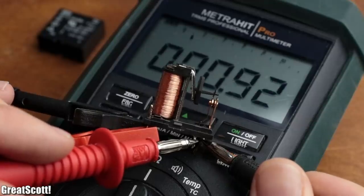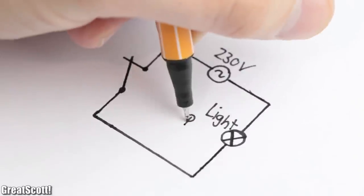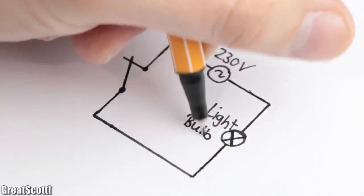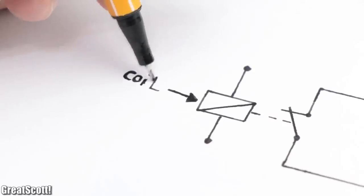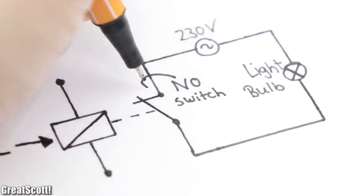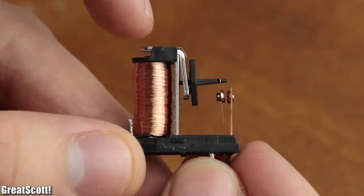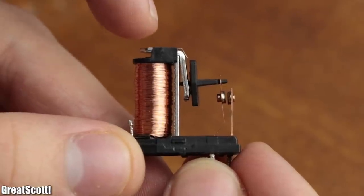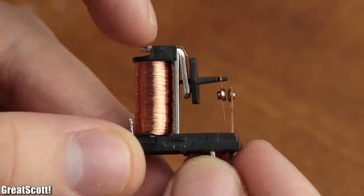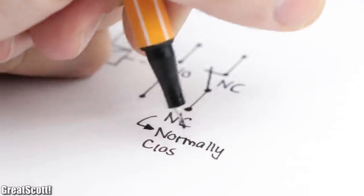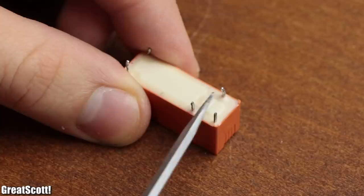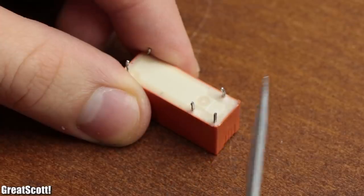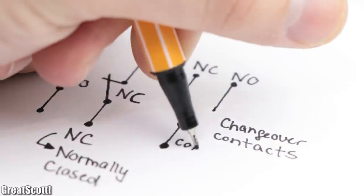This way, the switch is now closed and thus could connect our appliance to mains voltage. The symbol of a common relay looks like this, with the coil on the left side and the NO switch on the right side. NO stands for normally open, which describes the state of the contacts when the coil is not energized. There are also NC switches, aka normally closed switches, and changeover contacts which consists of three contact points and basically provides both switch options.